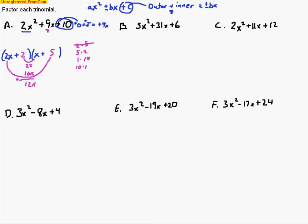We need to try 5 and 2 but in a different order — putting 5 first, then 2. So the inside terms make 5x and the outside terms make 4x. Those two numbers do add to make 9x, so we got it. We know we're right because the outer and inner terms make 9x, the 2x and x make 2x squared, and the 5 and 2 multiply to make 10. So the answer is (2x + 5)(x + 2).